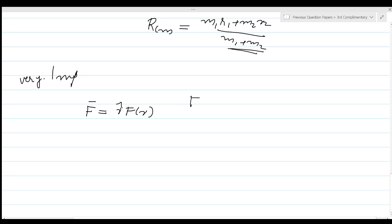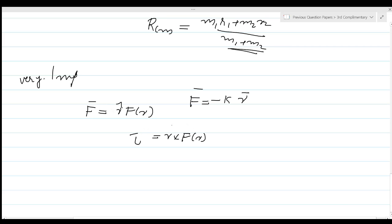For spring forces, F equals minus Kx. These are examples of central forces. The properties of central forces: the torque acting on a particle due to a central force is zero. The torque is r cross F. Since F is along r, the cross product r cross r equals zero because the angle between the two vectors is zero, so sin θ equals zero. Therefore, the torque is zero.